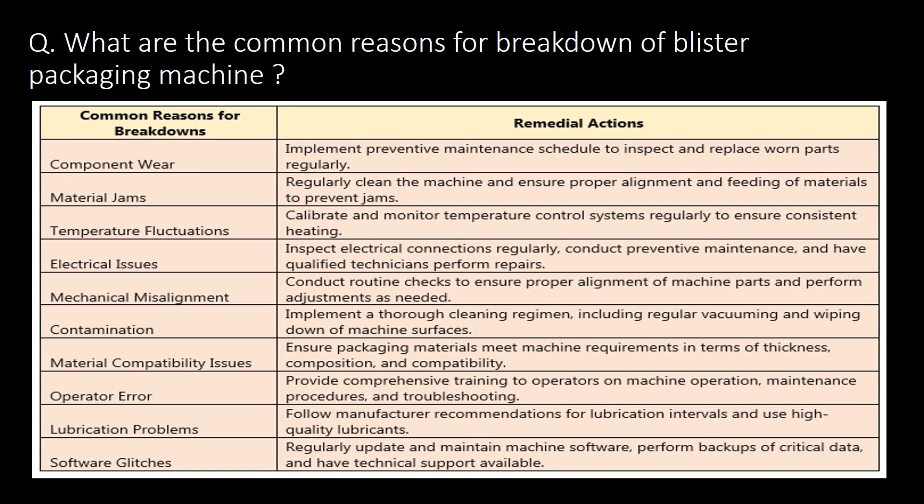What are the common reasons for breakdown of a blister packing machine? Component wear, material jumps, temperature fluctuations, electrical issues, mechanical misalignment, contamination, material compatibility issues, operator error, lubrication problems, and software glitches are the common reasons for breakdown of a blister packaging machine.